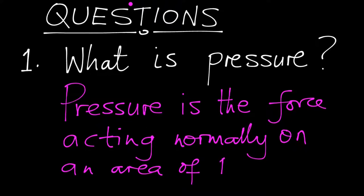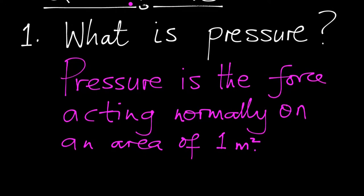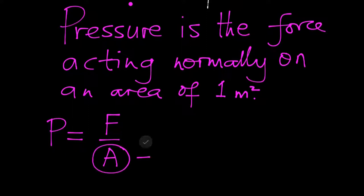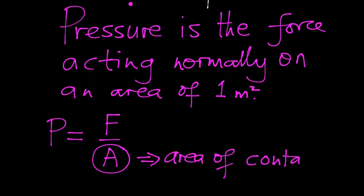In other words, if you want to get pressure, you take the force — which must be acting normally — on an area of one meter squared. Pressure is given by the formula P = F/A. Note that this area A is called the area of contact — not the cross-sectional area, not the surface area, but the area of contact. The force is in newtons and the area must be in meters squared.